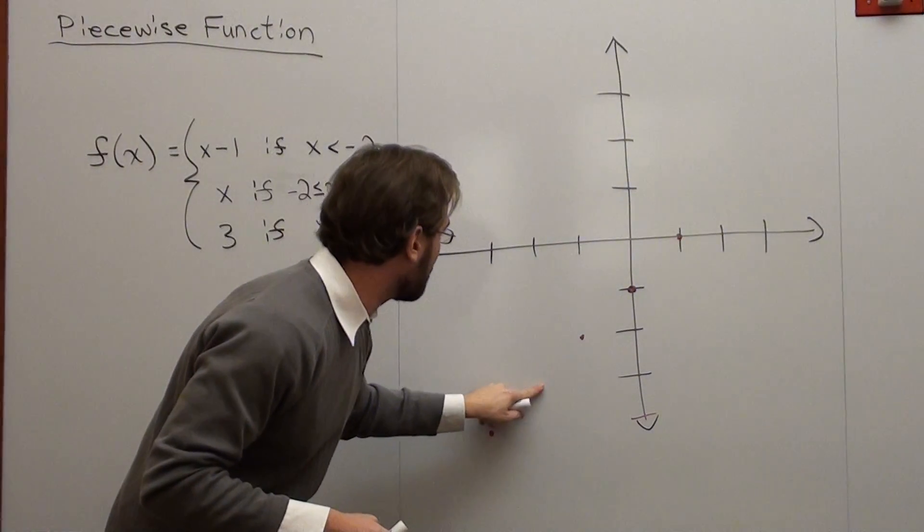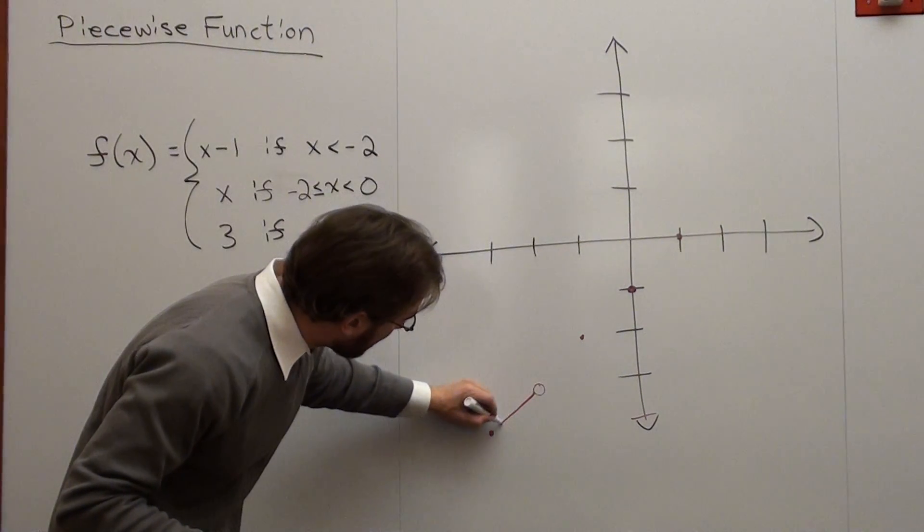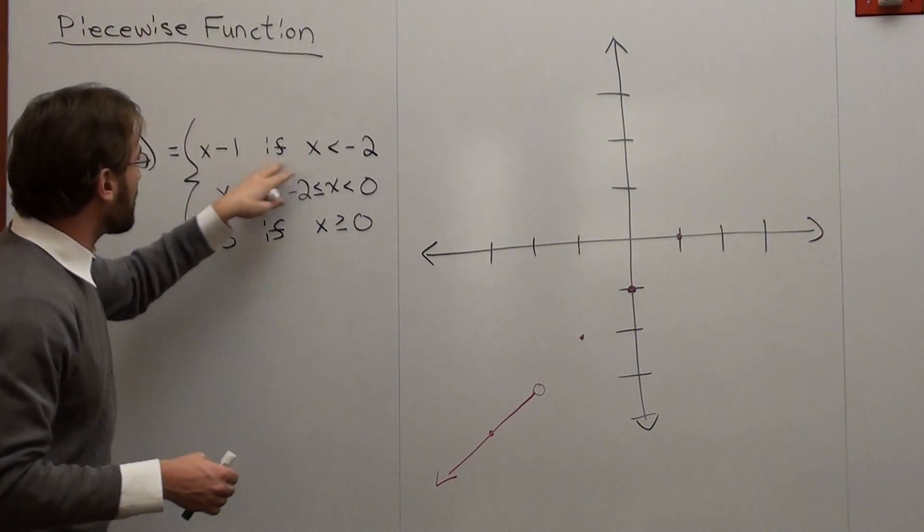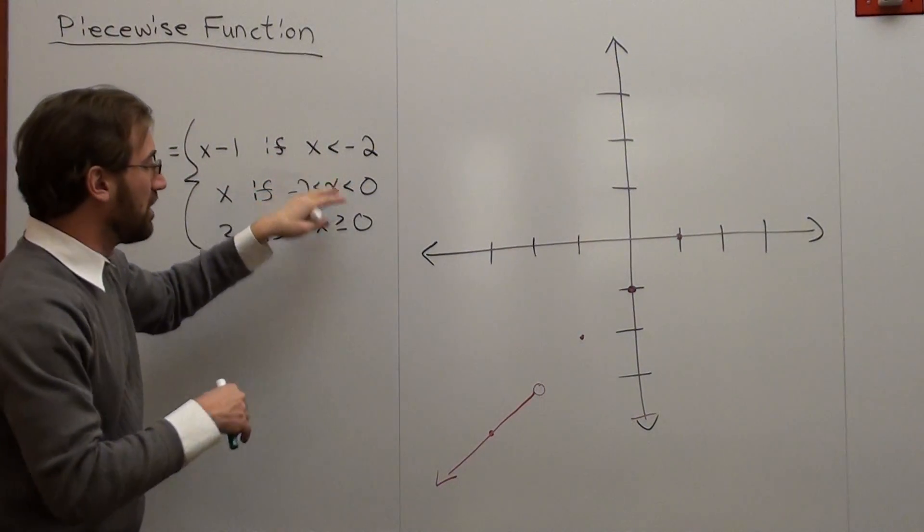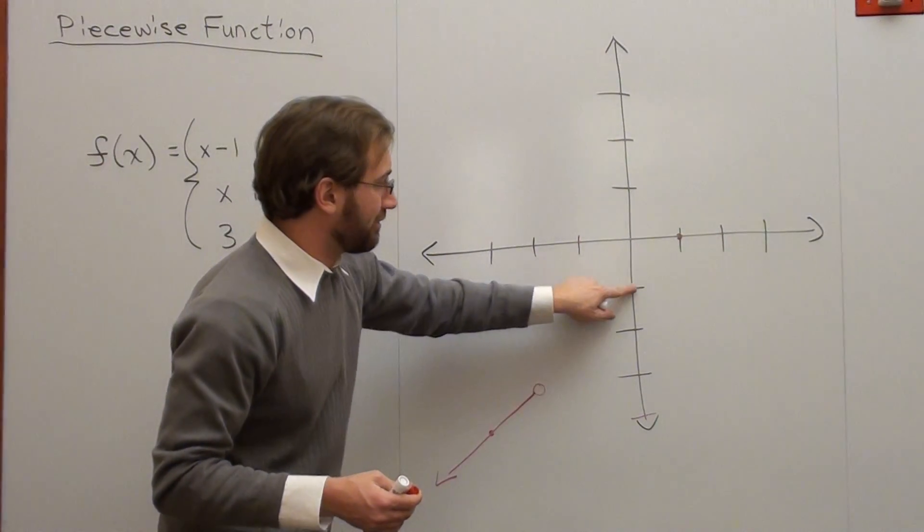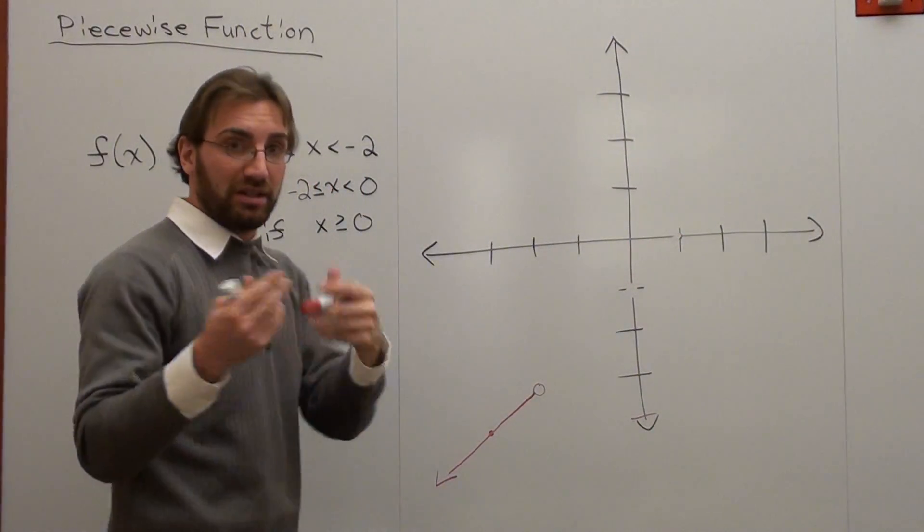It's an open circle because it doesn't have a line underneath it. So that's what I'm working with here. And basically what it means is it's a function that looks like this, but it stops right there. And it works for everything that's less than negative 2, but it doesn't actually include the value of negative 2. So what we basically did was we graphed one aspect of a piecewise function.